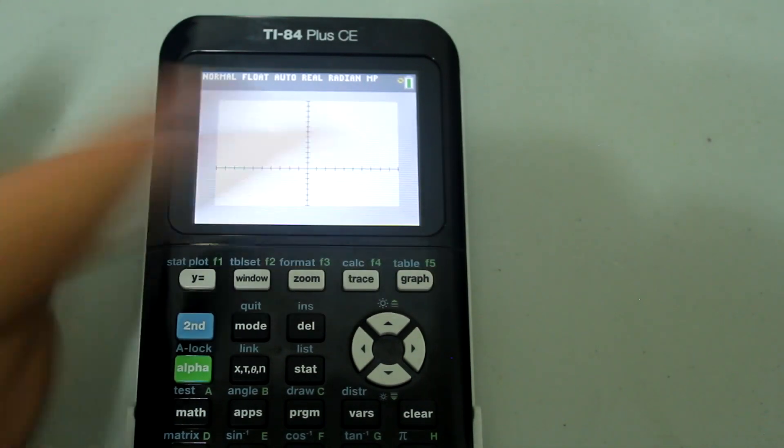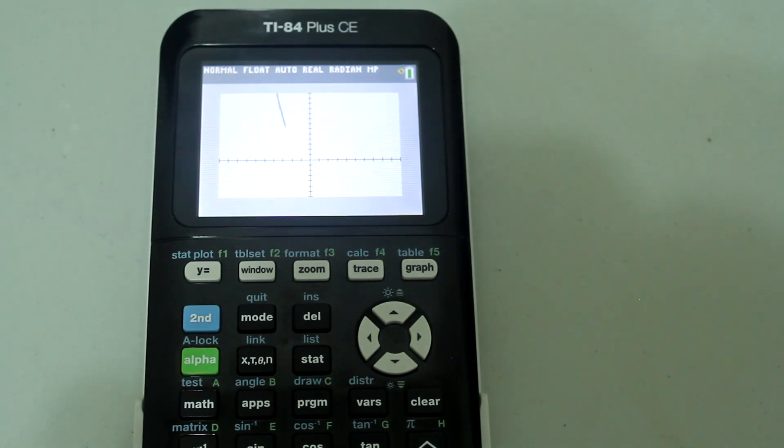Now if I press graph, you can see that I get the piecewise function that I initially wanted.